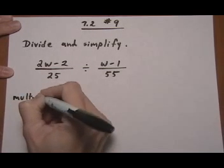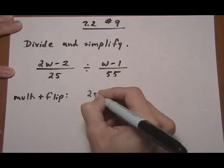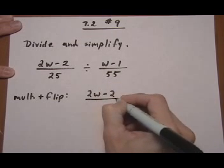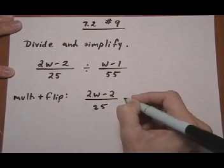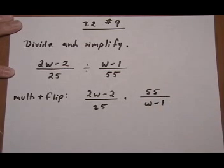So multiply and flip. So we've got 2w take away 2 over 25 times 55 over w minus 1.